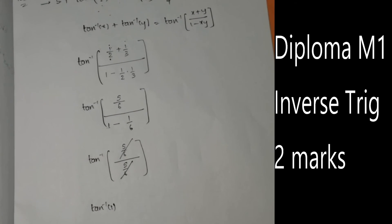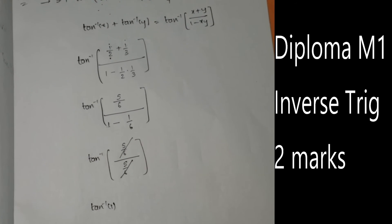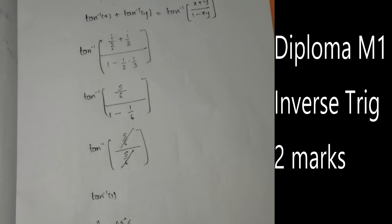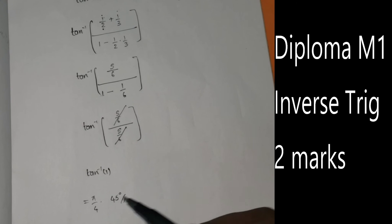tan⁻¹(1) equals 45 degrees. Since tan(45°) = 1, we have tan⁻¹(1) = 45° = π/4. Therefore the result is proved.